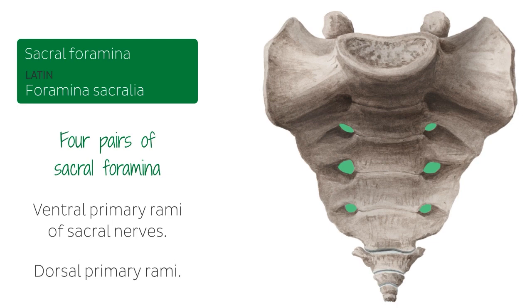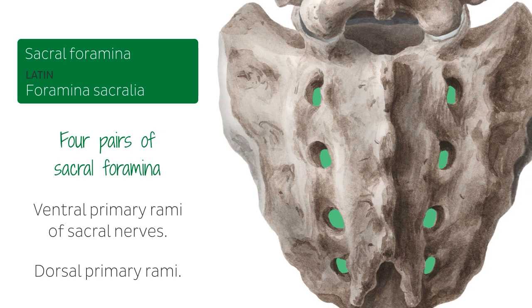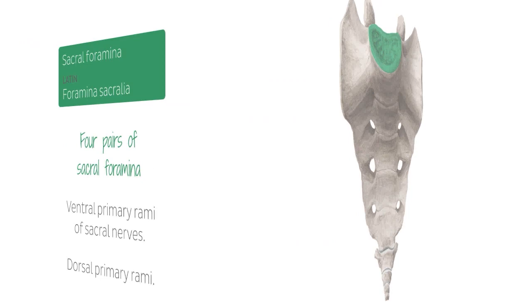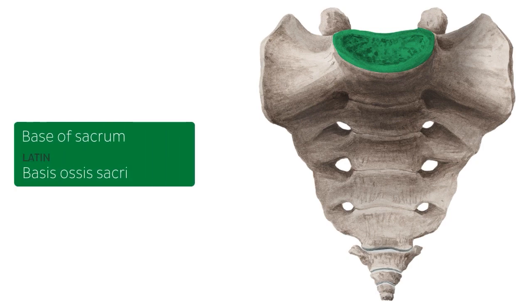Important structures will be passing through the sacral foramen, and here on this image you can now see them from a posterior view, clearly showing the four pairs highlighted on both sides of the sacrum. The next landmark we're going to be highlighting on the sacrum is the base of the sacrum.